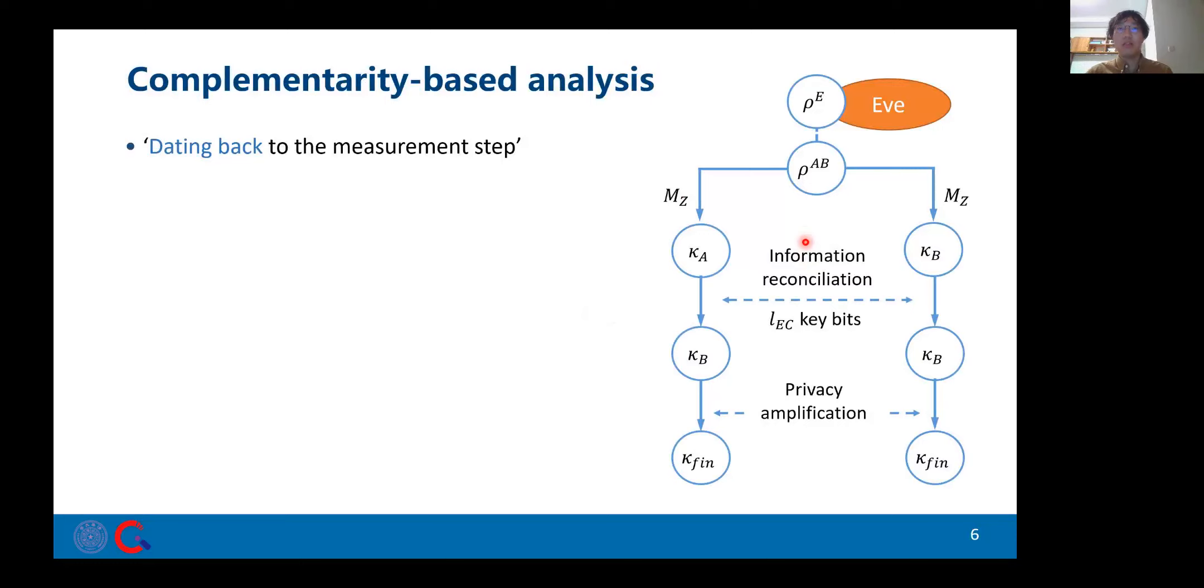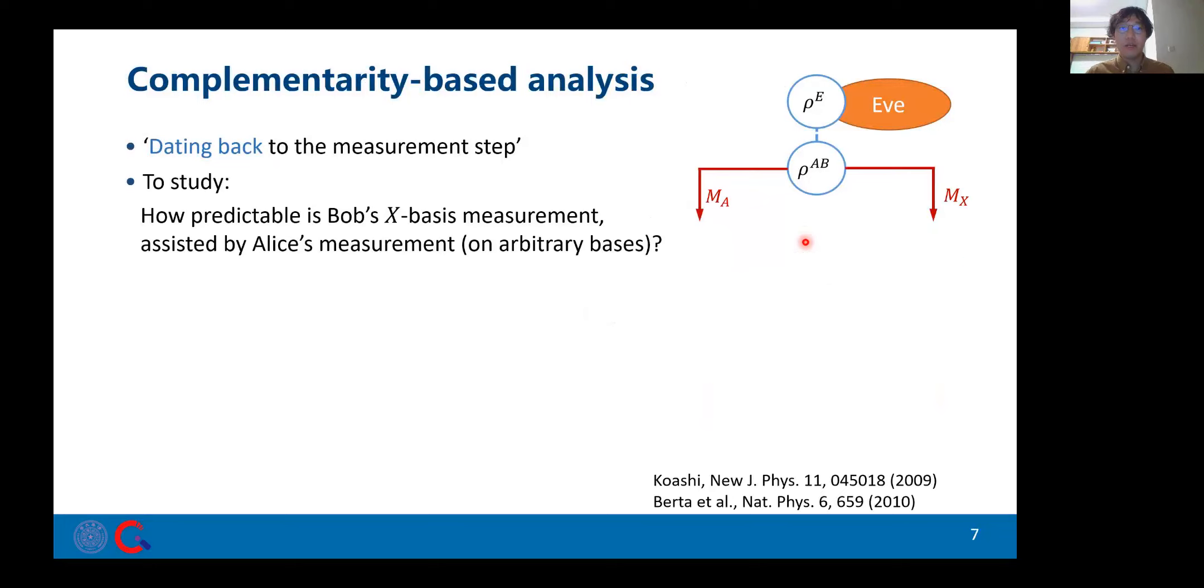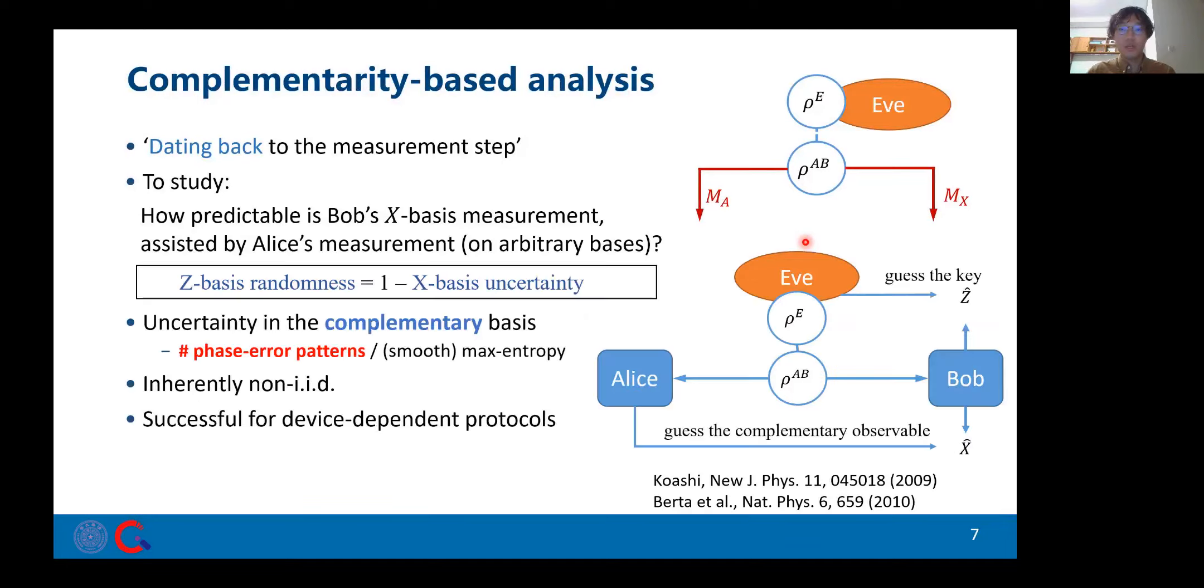In the complementarity-based analysis, we date back to the measurement step. Now imagine that instead of taking the key generation measurements, Bob measures his state on the complementary basis, which we denote as X-basis here. We can put QKD security into a guessing game. We ask, how predictable is Bob's X-basis measurement assisted by Alice's measurements? The more accurate Alice guesses this complementary measurement, the less information Eve gains about the key. We call this uncertainty in the complementary basis as the number of fixed error patterns, or max entropy.